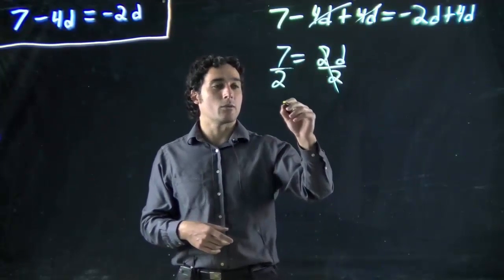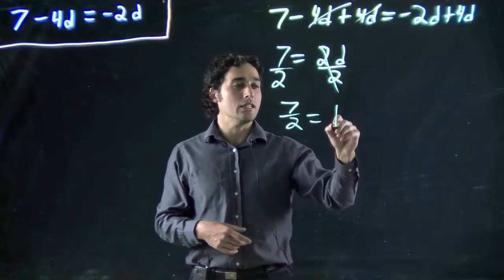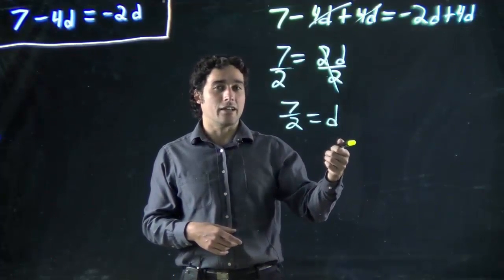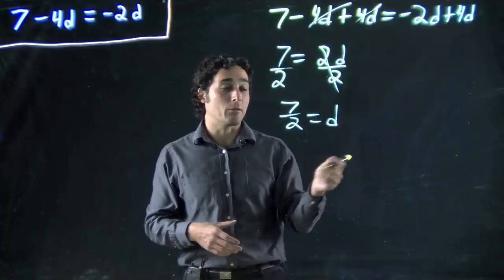We're left with 7 over 2 equals d. Again, it doesn't matter that the variable is on this side—it's the same thing as if it was on either side. We could rewrite it on the other side if we want.